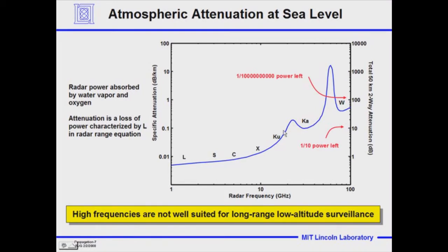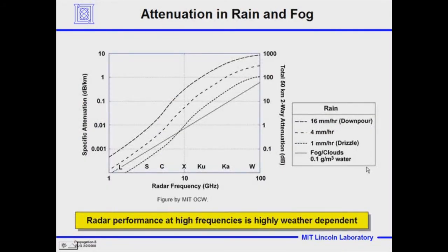So again, we note that high frequencies are not well suited for low altitude surveillance. Now let's look at the case where rain and fog are in the atmosphere. They too will attenuate in addition to the normal atmosphere. If rain is present, there will be significant attenuation. At high frequencies, radar performance is heavily weather dependent — you're going to get a lot of attenuation in rain. At low frequencies, it's going to be much more reasonable.